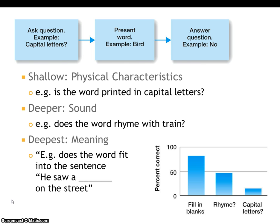Looking at the results, when participants were later asked to recall as many words as they could, they remembered far more from the fill-in-the-blanks condition, followed by the rhyming condition, and fewest from the capital letters condition — the very shallow level of processing. The basic idea is: the deeper you process the items you're trying to remember, the more likely you are to recall them.